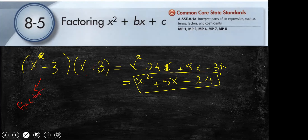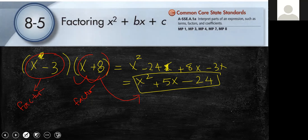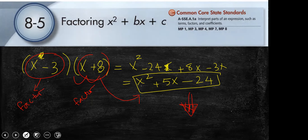This one is a factor, and this one also is a factor. Multiplying these two factors gives me this trinomial. This is what we learned in the previous lesson. Today, I will give you the trinomial — the expression — and I want you to factorize it: to write it as x minus 3 times x plus 8.